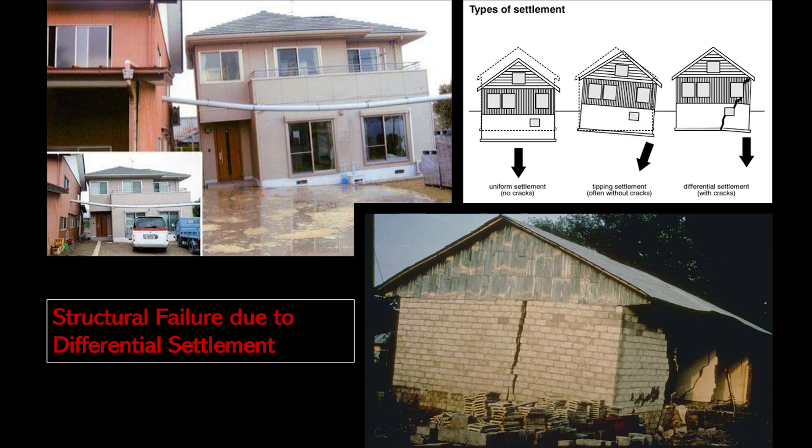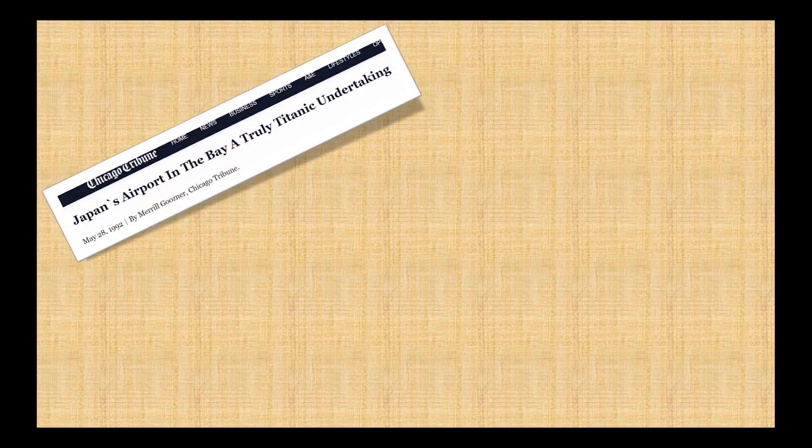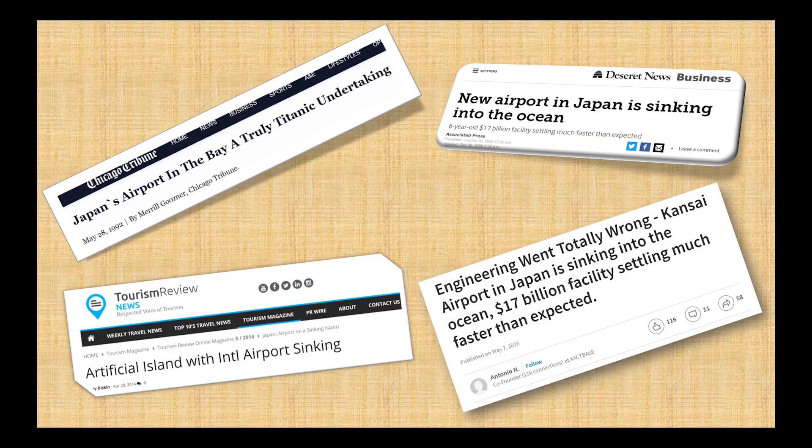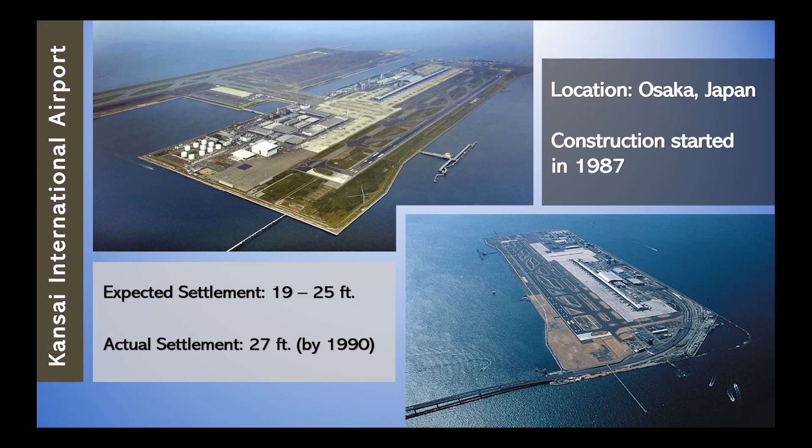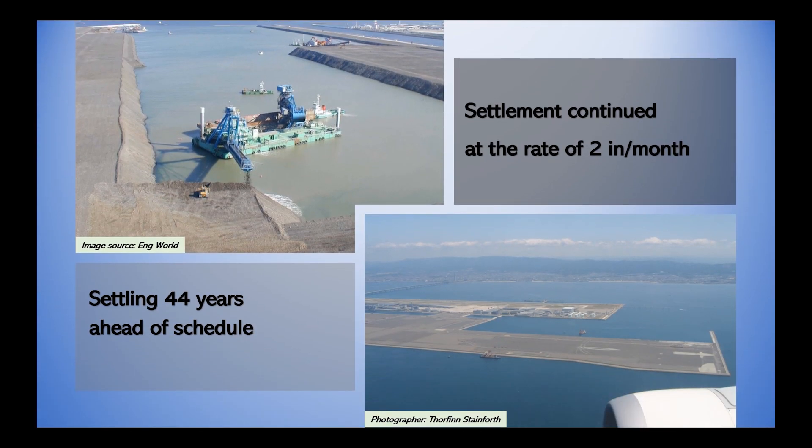The wrong estimation or even negligence of consolidation can lead to severe structure failures. For instance, the Kansai International Airport is a famous case where the expected settlement was 19 to 25 feet, but the actual settlement went on to become 27 feet by the end of island construction, and it continued at the rate of 2 inches per month.